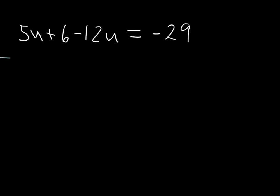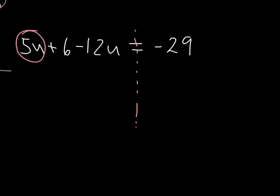Here we have another equation: 5u plus 6 minus 12u equals negative 29. Again, we want to solve for u, meaning we want to isolate for u. Since we're solving, there's two sides, the left side and the right side. The first thing I'm going to do is combine any similar terms, or like terms as we call them.